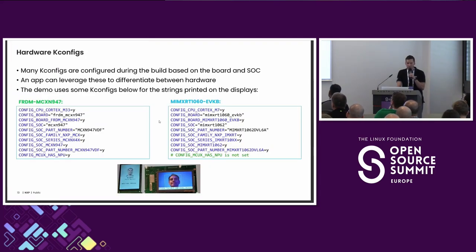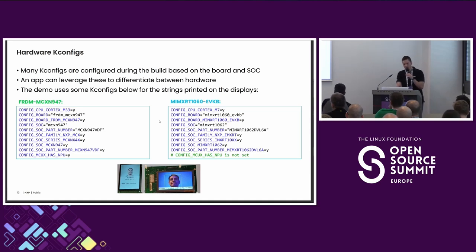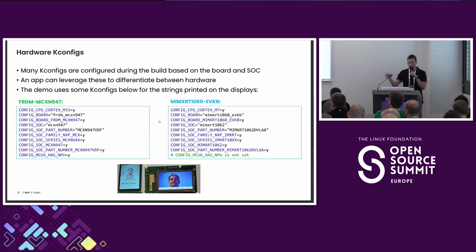Kconfig is used for software configuration — for example, if you want to enable printing for certain platforms or conditionally modify behavior in your code, you can do it directly with Kconfig without touching your main code. This is the advantage: by handling variation only through Kconfig, you keep consistent main code and avoid inconsistent changes across different application versions.